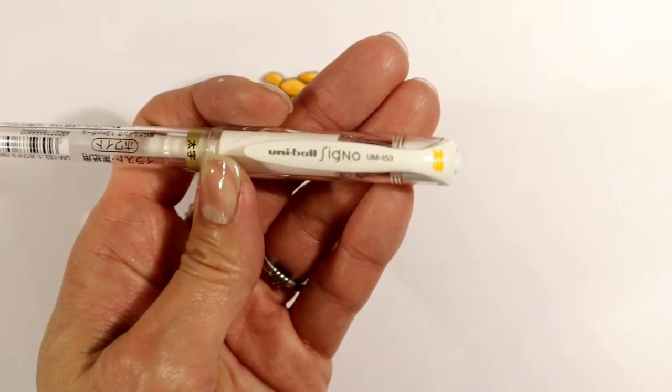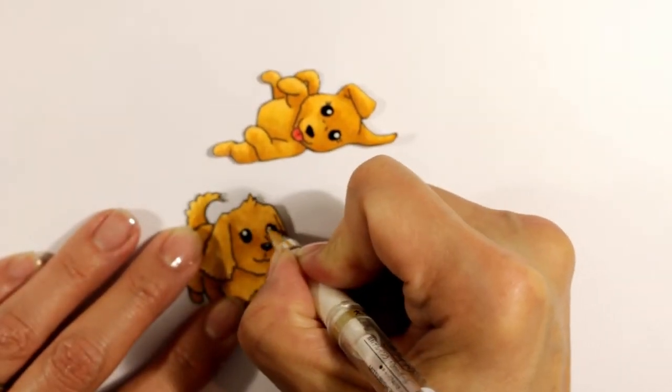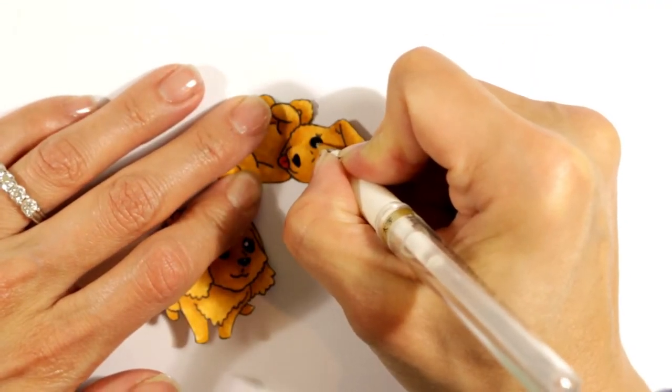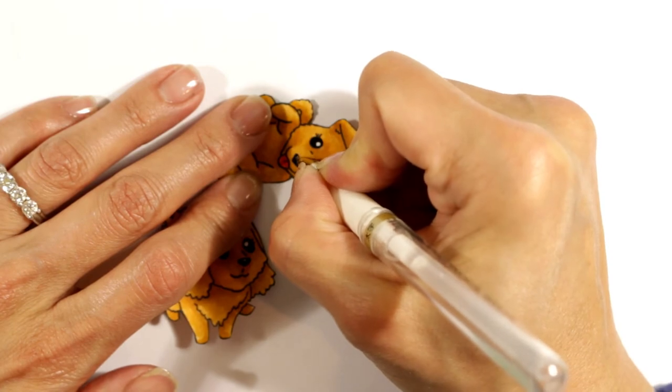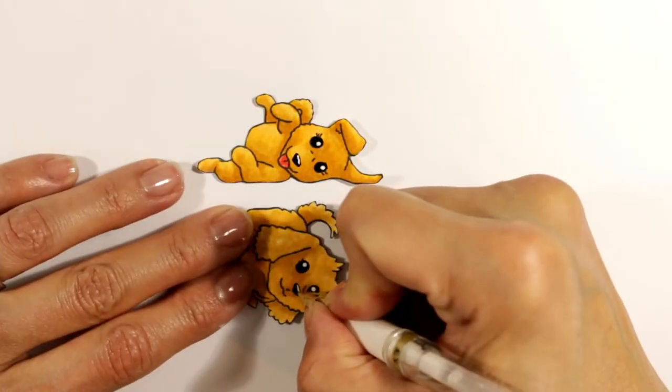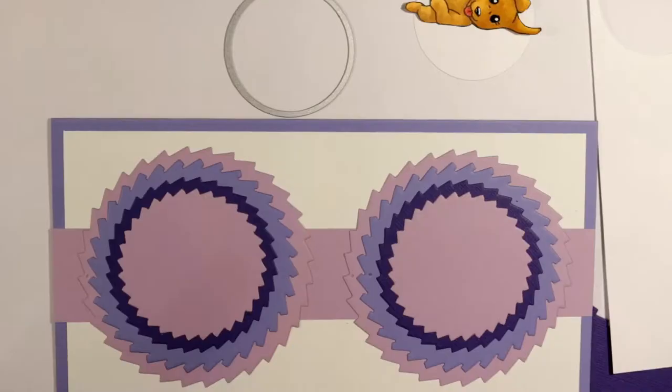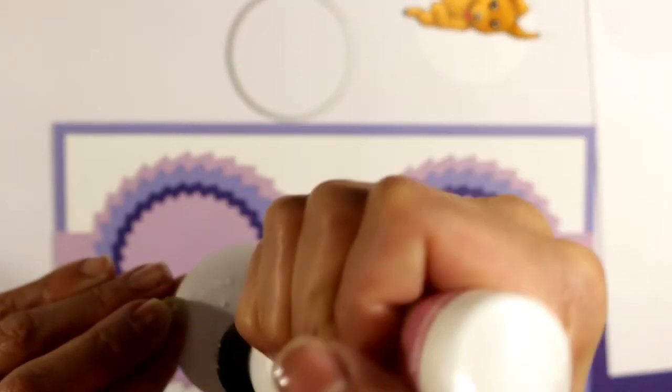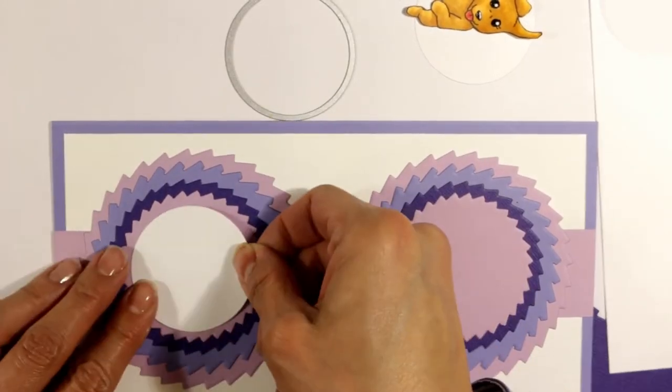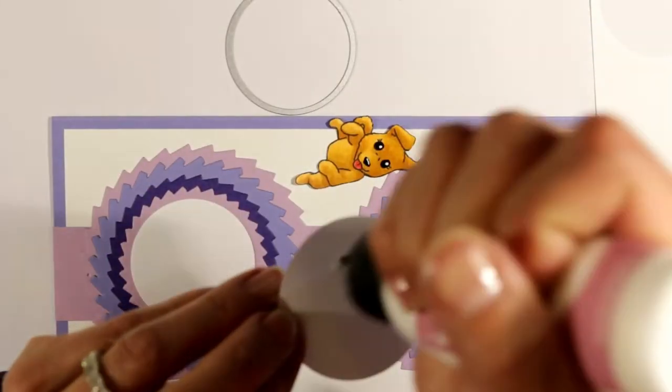Off camera, I'm using a Uniball Signal White gel pen to re-establish the highlights, the shine on the noses and the eyes of both of the puppies, because the glaze pen has a tendency to bleed a little bit.